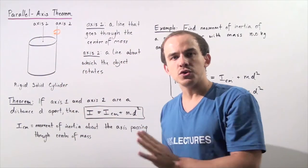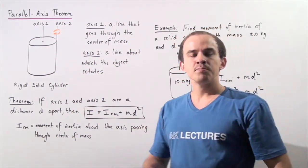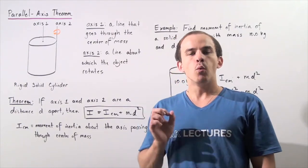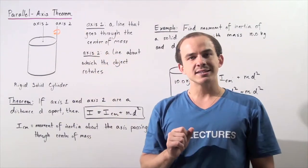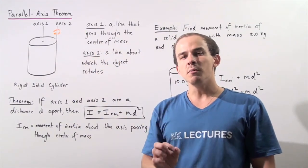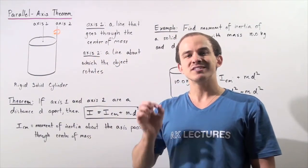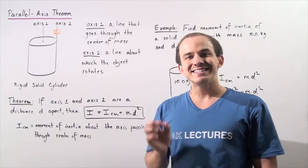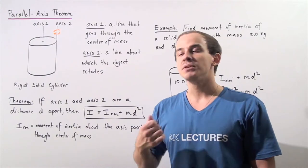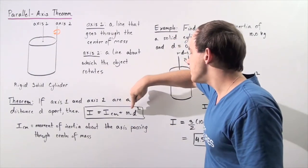then we can use the following formula to help us calculate the moment of inertia of our object rotating about axis number two. The moment of inertia is equal to the sum of the moment of inertia about the center of mass axis plus m d squared.